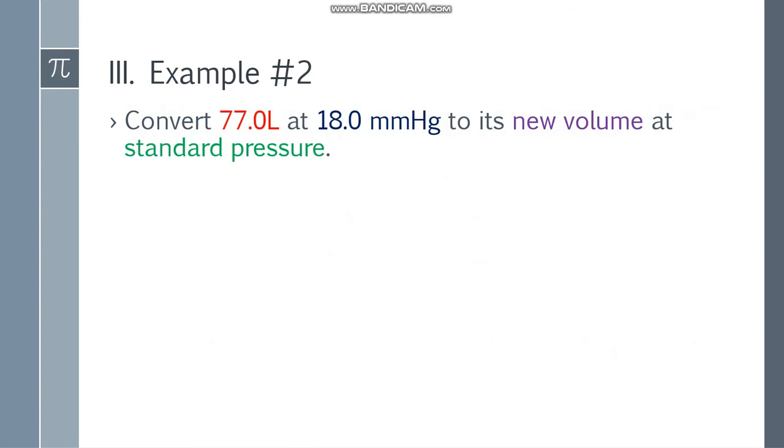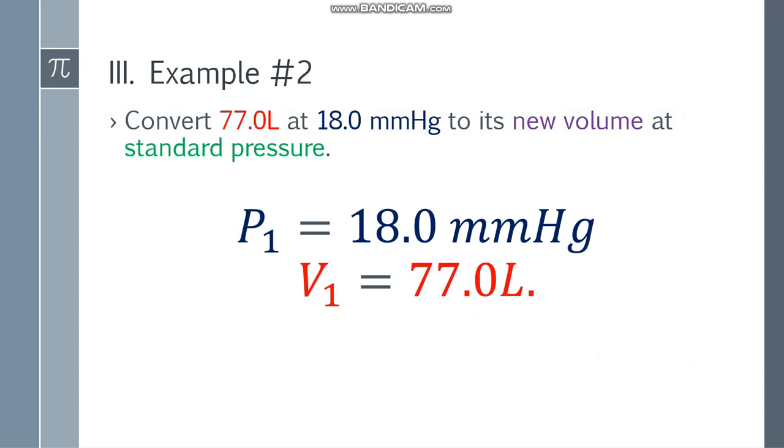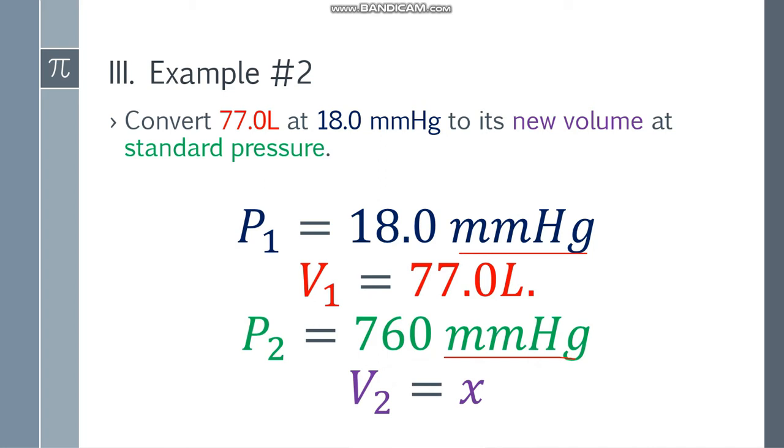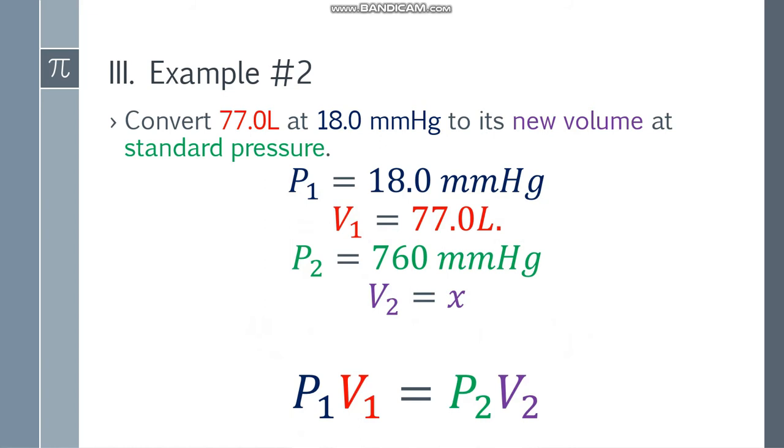Example number 2: Convert 77.0 liters at 18.0 mmHg to its new volume at standard pressure. Standard pressure again. Let's have P1 is equal to 18.0 mmHg, and V1 is 77.0 liters. P2 will be 760 mmHg. Why? Check the conversion units. mmHg is used here, so we'll use mmHg. V2 will be X, that will be the new volume.